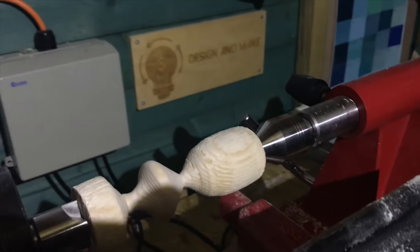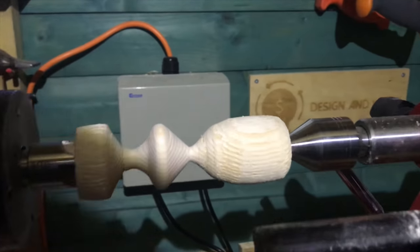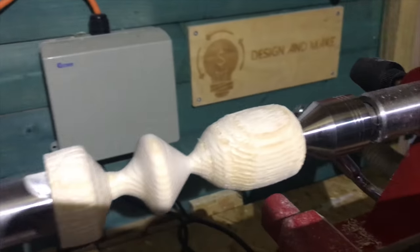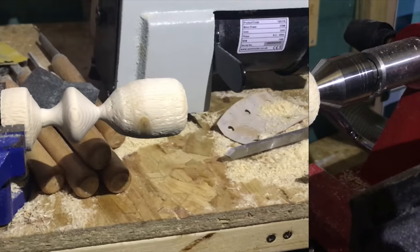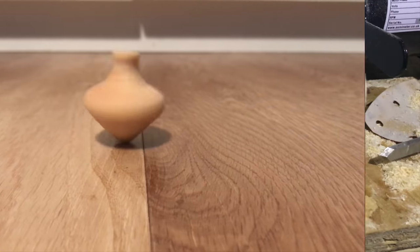Okay, so here we have our spinning top. Now we just need to part it off the lathe. So this is the difficult part which I'm nervous about. I'm not going to part it—I'm going to saw it. So I'm going to take it off now.